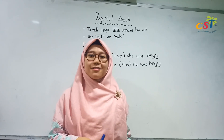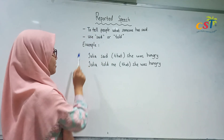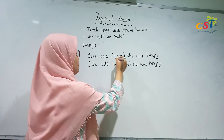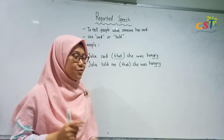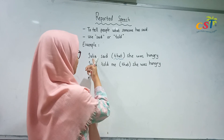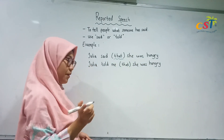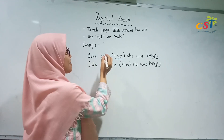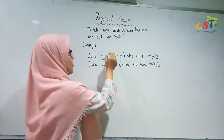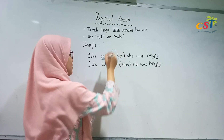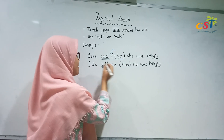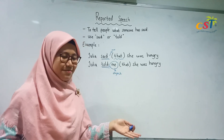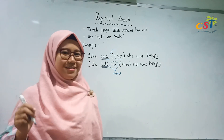How do you differentiate 'said' and 'told'? Let's take a look. For example: 'Julia said that she was hungry.' Note that the word 'that' is optional — you can use it or leave it out. Compared to 'Julia told me that she was hungry.' After the word 'said,' there is no object. But if you use 'told,' it must be followed by an object — to whom you say the statement must be clear. That's the difference.